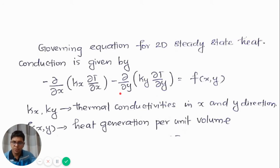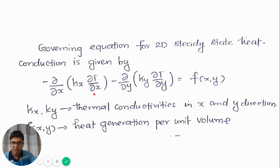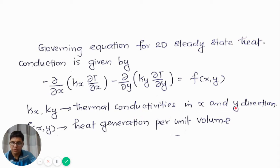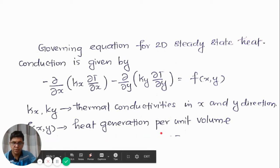The differential equation for two-dimensional heat transfer can be written as: minus d/dx(kx * dT/dx) minus d/dy(ky * dT/dy) equals f(x,y). This represents the steady-state heat conduction equation. Here kx and ky represent the thermal conductivities in the x and y directions. If the material is isotropic then kx equals ky. f(x,y) represents the heat generation per unit volume.